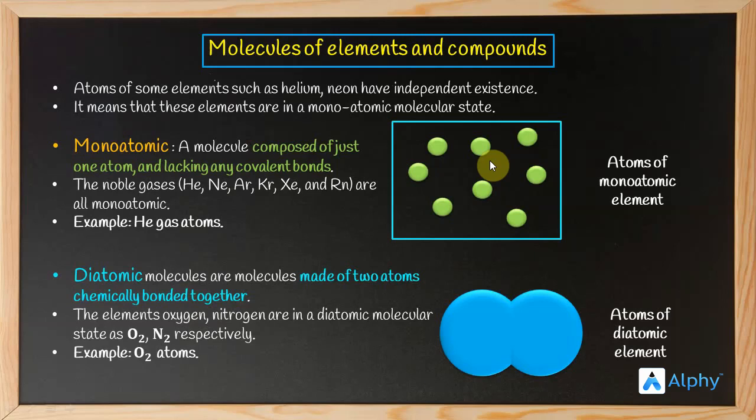Many elements' atoms have such diatomic bonding. For example, O2 and N2 - oxygen's two atoms remain together, nitrogen's two atoms remain together. The two oxygen atoms are in diatomic molecular state, and they have covalent bonds.